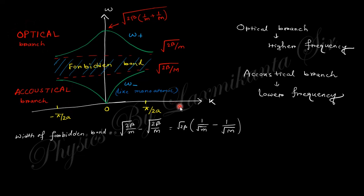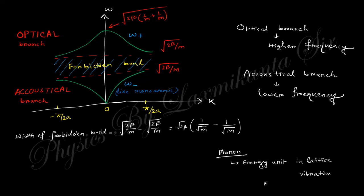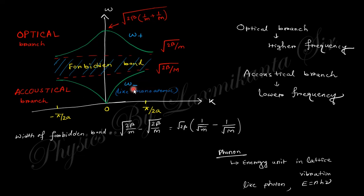The lower branch corresponds to acoustic phonons and the upper branch to optical phonons. A phonon is analogous to a photon: just as a photon is the energy particle of light, a phonon is the energy quantum of lattice vibration — like E = nhν for photons. The optical branch has higher energy (higher ω), hence the name optical. The region with no energy values between the branches is the forbidden band.